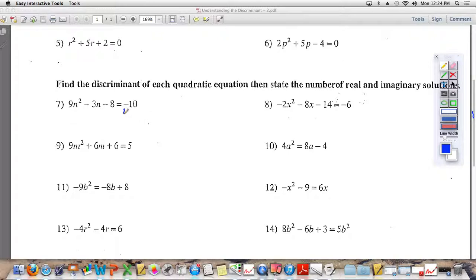So I'm going to kind of walk you guys through this. The first thing you need to do is make sure that these equations are all equal to 0. So I add 10 to make it equal to 0, leaving me with 9n squared minus 3n, negative 8 plus 10 is a positive 2, is equal to 0. So now once it's equal to 0, you can go ahead and find the value of the discriminant.